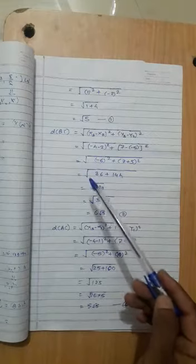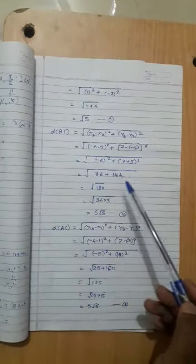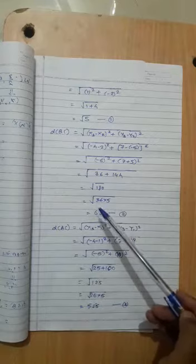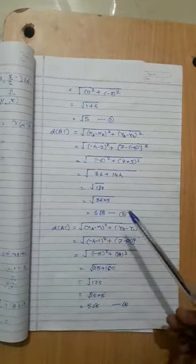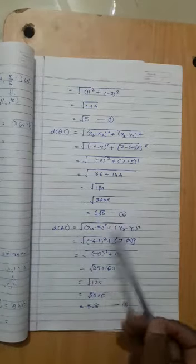Square: 144 plus 36 equals 180. Factor: 36 into 5. Square root of 36 is 6, so 6 root 5.